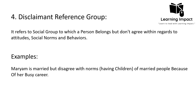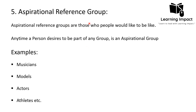The disclaimant reference group refers to a social group to which individuals currently belong, but with which they disagree regarding attitudes, social norms, and behavior. For example, if Mariam is married but disagrees with norms such as having children — perhaps due to her busy career — she belongs to the group but rejects its norms, making it a disclaimant reference group for her.